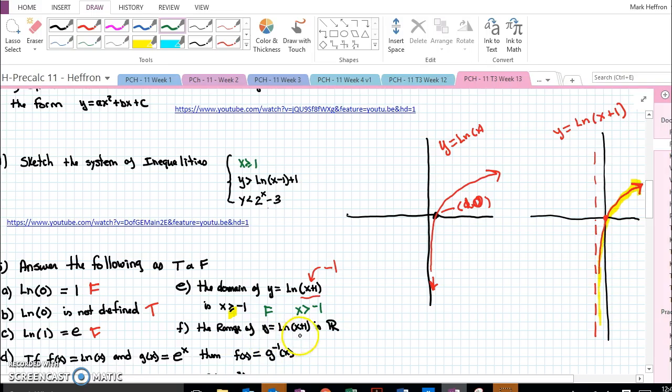The range of ln of x plus 1 is all real numbers. That's true, because we go forever up and down.